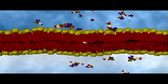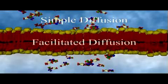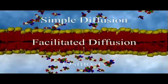Let's now look at three types of passive transport that occur as a result of diffusion: simple diffusion, facilitated diffusion, and osmosis.